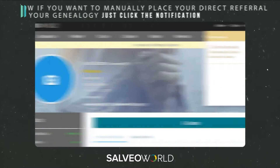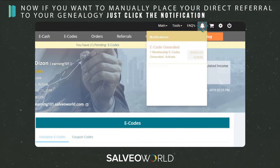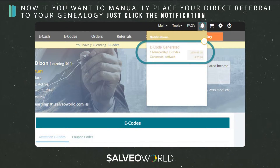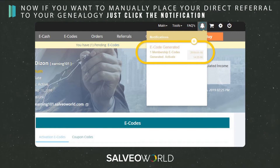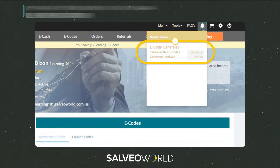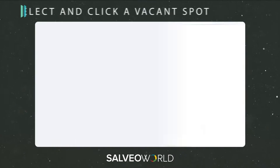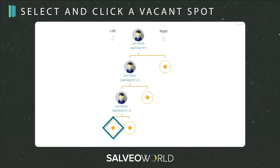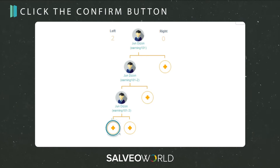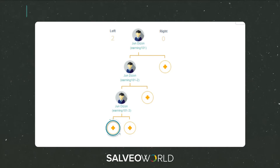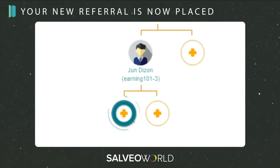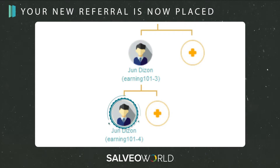Now if you want to manually place your direct referral to your genealogy, just click notification. Select and click a vacant spot. Click the confirm button and your new referral is now placed.